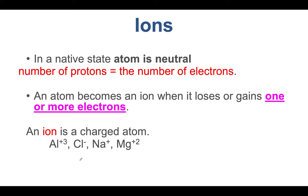Here are some examples of ions: aluminum has three positive charges, meaning it has lost three electrons; chloride has gained one electron; sodium has lost one electron; and magnesium has lost two electrons.